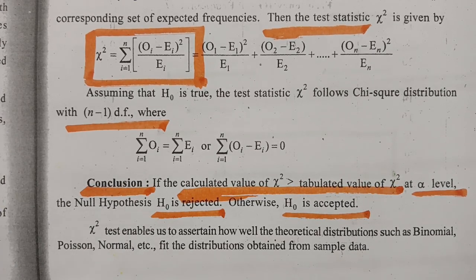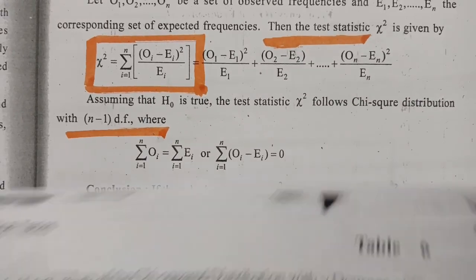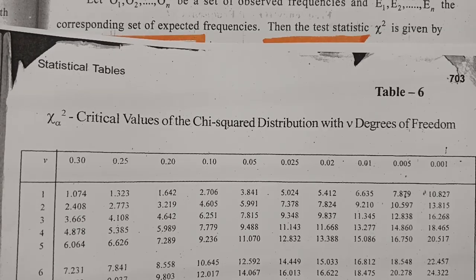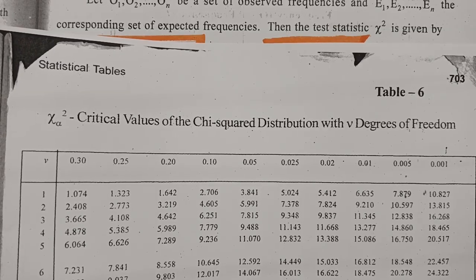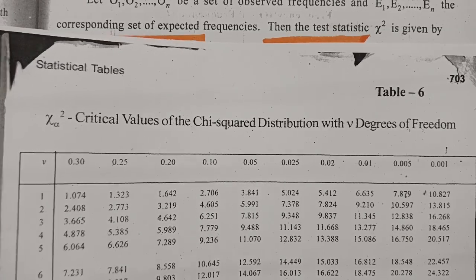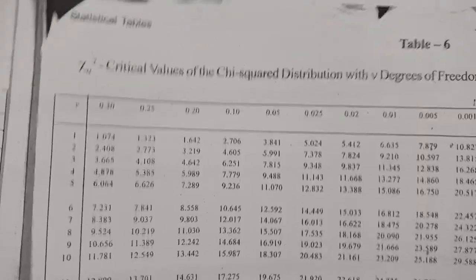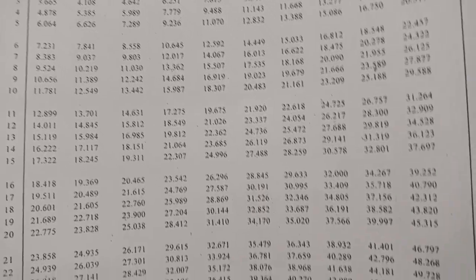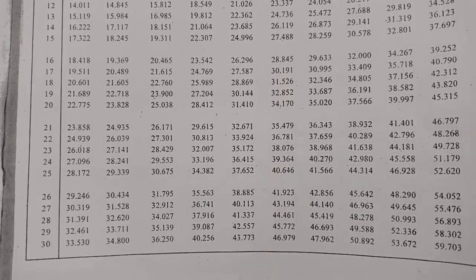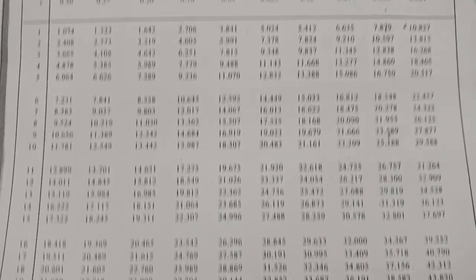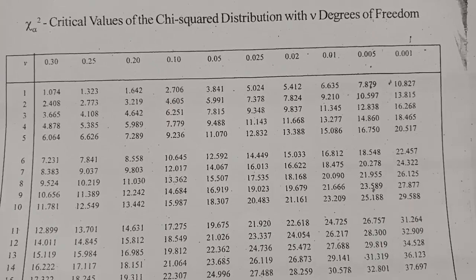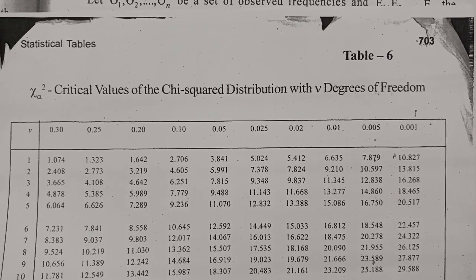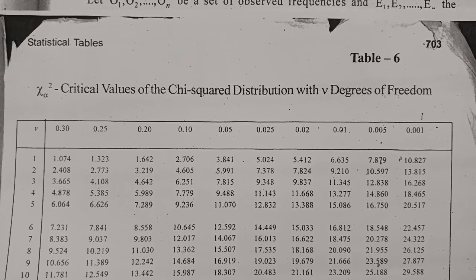Let me show you the table values. These are the critical values of chi-square distribution with V degrees of freedom. The calculated value and the observed value are compared against the table values. If the calculated value is less than the table value, we accept. If the calculated value is greater than the table value, we reject. This is the table for chi-square critical values.